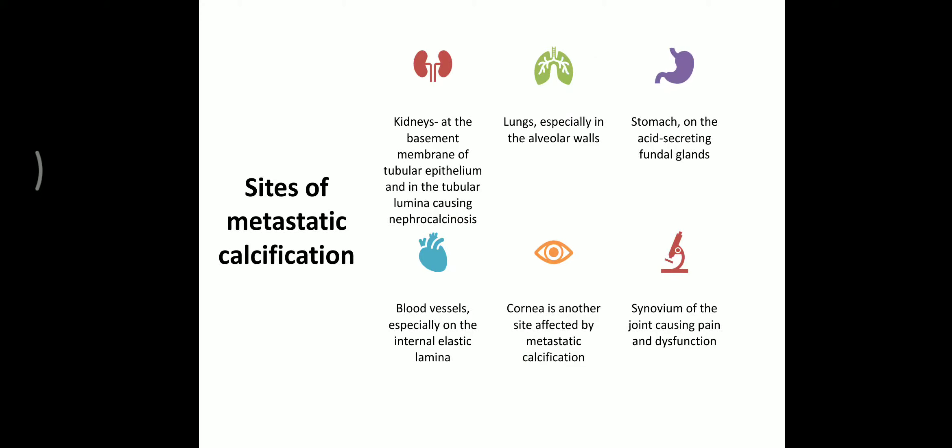Sites of metastatic calcification include: the kidney, at the basement membrane of tubular epithelium and tubular lamina, causing nephrocalcinosis, which may lead a patient into chronic renal failure. In the lungs, especially in alveolar walls. In the stomach, on the acid-secreting fundal glands. In blood vessels, on the internal elastic lamina. Over the cornea. And in synovial joints, causing pain and dysfunction.